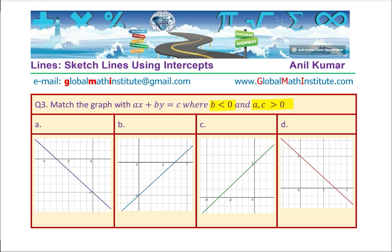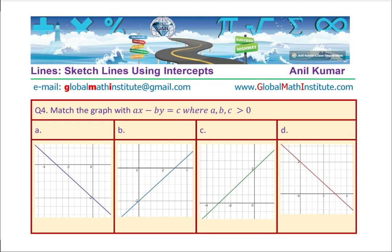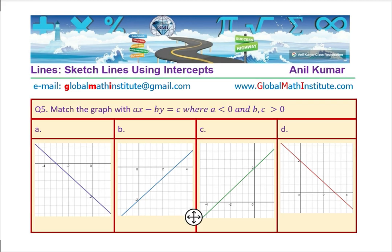Now we have changed the equation. Question number four is ax minus by equals c, where all of a, b, and c are positive — notice the minus sign between the terms. Question number five is ax minus by equals c when a is negative and b and c are positive. You can pause the video and answer the questions before we solve them together.